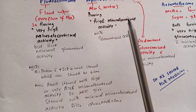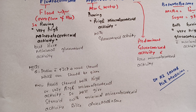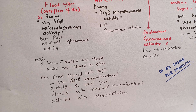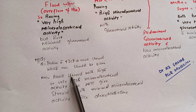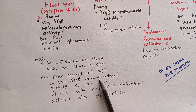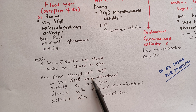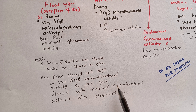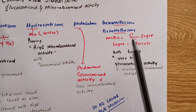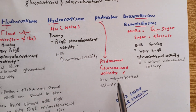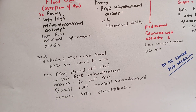Why is it important to know the glucocorticoid and mineralocorticoid activities of these commonly used steroids? For example, if we have a patient with high intracranial pressure who needs a steroid, which one do we prescribe? Increased intracranial pressure means we do not want mineralocorticoid activity, because fluid retention would increase that pressure. So we avoid steroids with high or very high mineralocorticoid activity and give steroids with minimal mineralocorticoid activity — like dexamethasone and betamethasone.